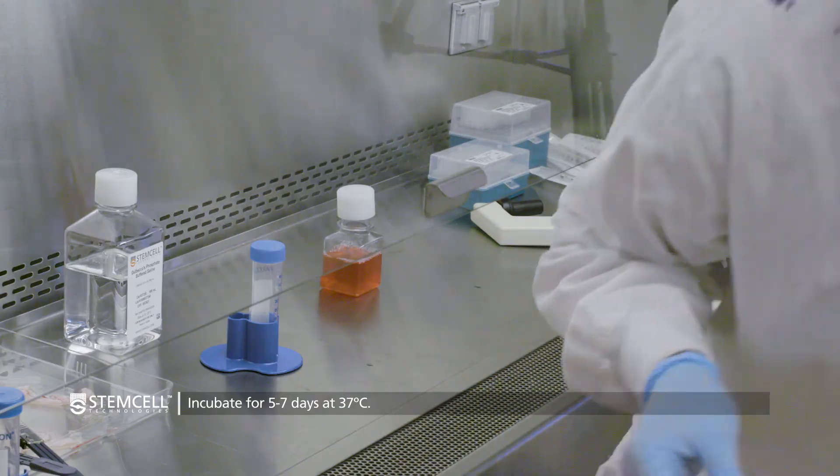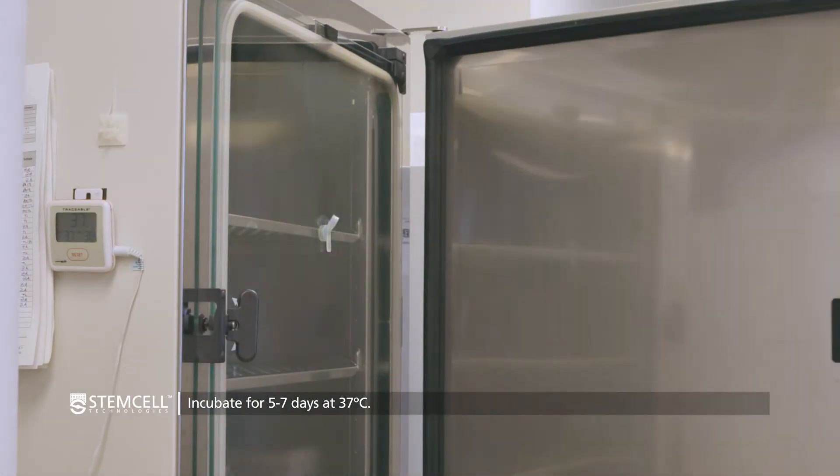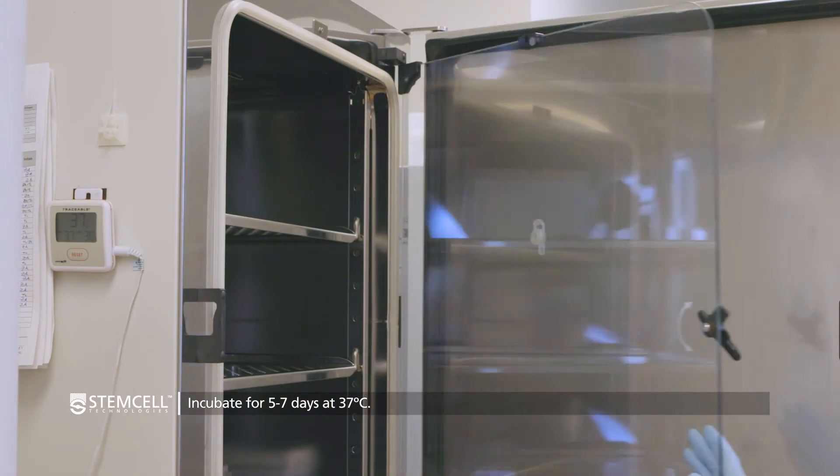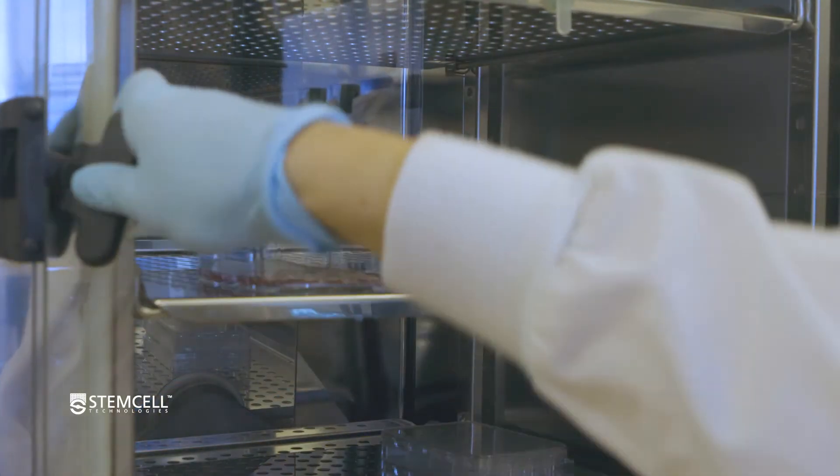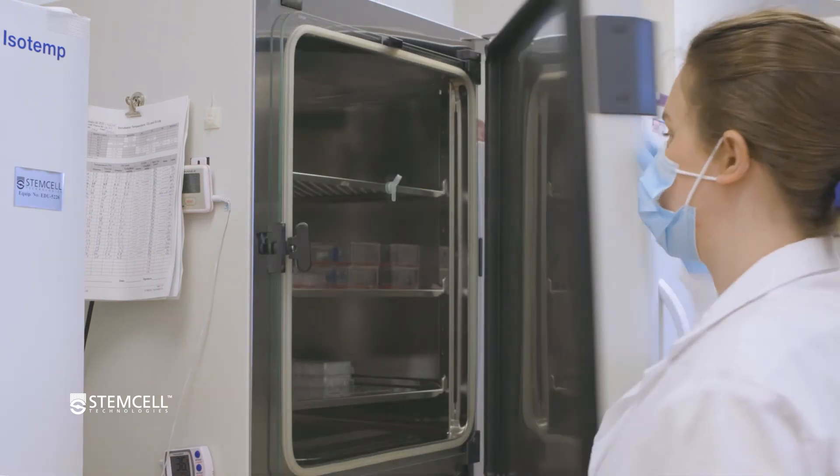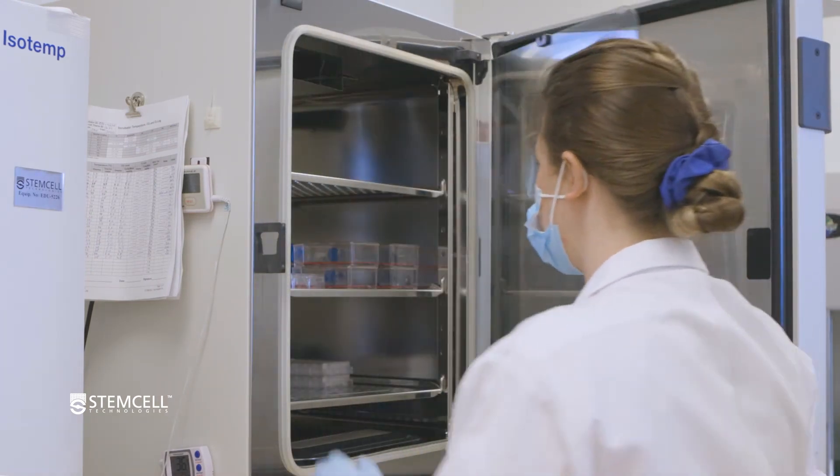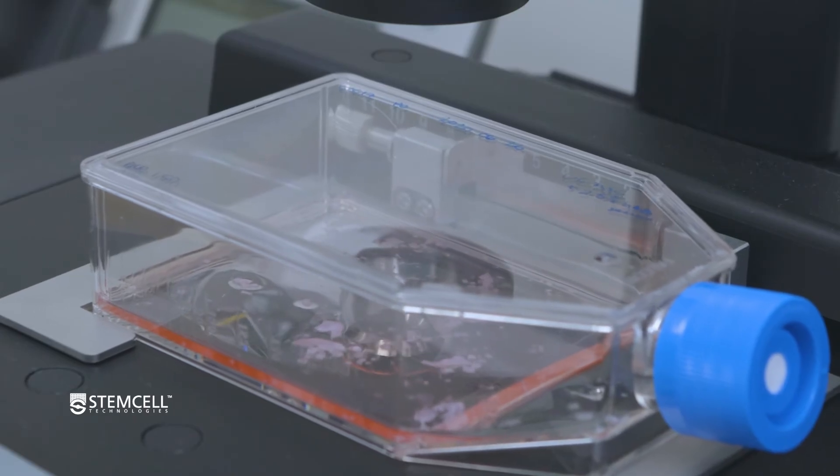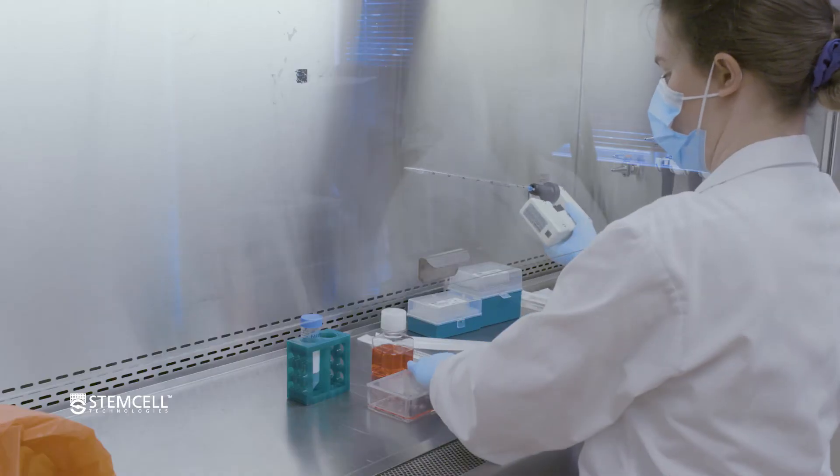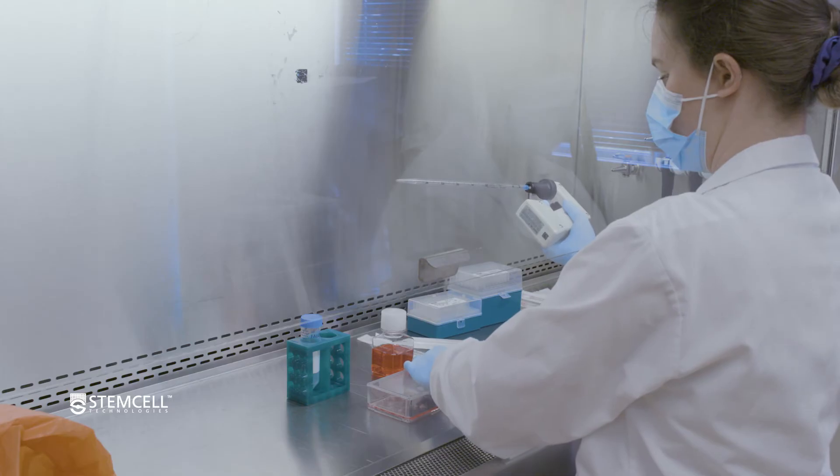Incubate the flask undisturbed for 5 to 7 days at 37 degrees Celsius. Do not allow the media to fully evaporate or turn yellow. After 5 to 7 days, most tissue pieces should have attached to the flask. At this time, perform a half-medium change with complete MesenCult ACF Plus umbilical cord medium.